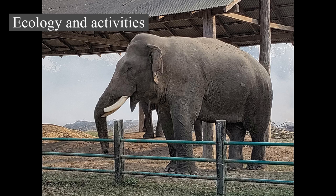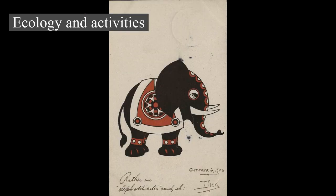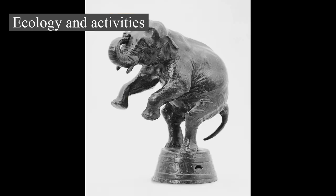Elephants are important seed dispersers. African forest elephants ingest and defecate seeds with either no effect or a positive effect on germination. The seeds are typically dispersed in large amounts over great distances. In Asian forests, large seeds require giant herbivores like elephants and rhinoceros for transport and dispersal. This ecological niche cannot be filled by the next largest herbivore, the tapir. Because most of the food elephants eat goes undigested, their dung can provide food for other animals such as dung beetles and monkeys.